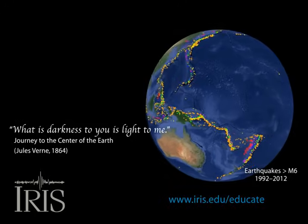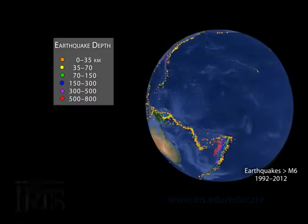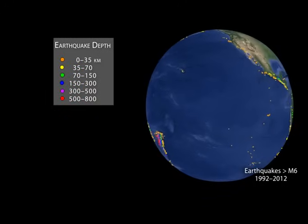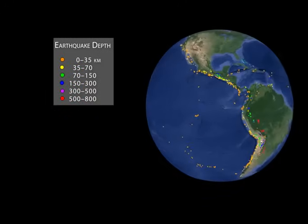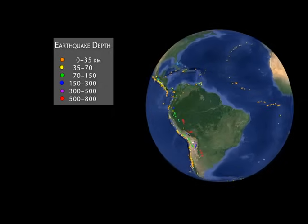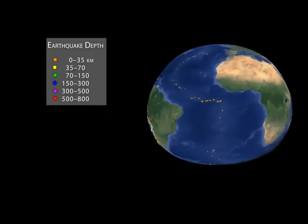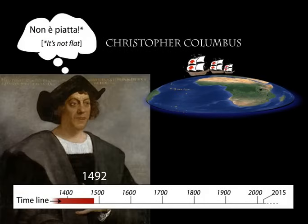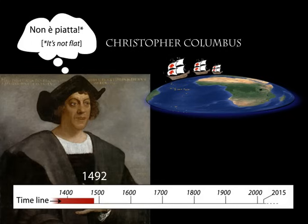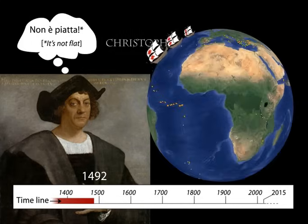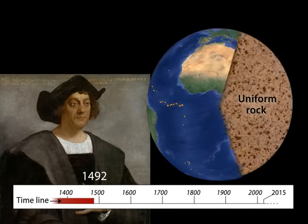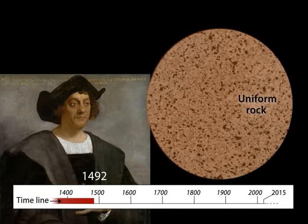Much of our knowledge of Earth's insides comes from monitoring the thousands of earthquakes that occur every year. Five centuries ago, the world had mostly accepted that the Earth was not only a sphere, but was thought to be of uniform rock throughout.